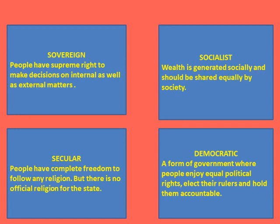The preamble of the Constitution reads like a poem on democracy. It contains the philosophy on which the entire Constitution has been built. Sovereign: the people have the supreme right to make decisions on internal as well as external matters — no external power can dictate the government of India. Socialist: wealth is generated socially and should be shared equally by society; the government should regulate the ownership of land and industry to reduce socio-economic inequalities. Secular: citizens have complete freedom to follow any religion, but there is no official religion — the government treats all religious beliefs and practices with equal respect. Democratic: a form of government where people enjoy equal political rights, elect their rulers, and hold them accountable, with the government run according to some basic rules.